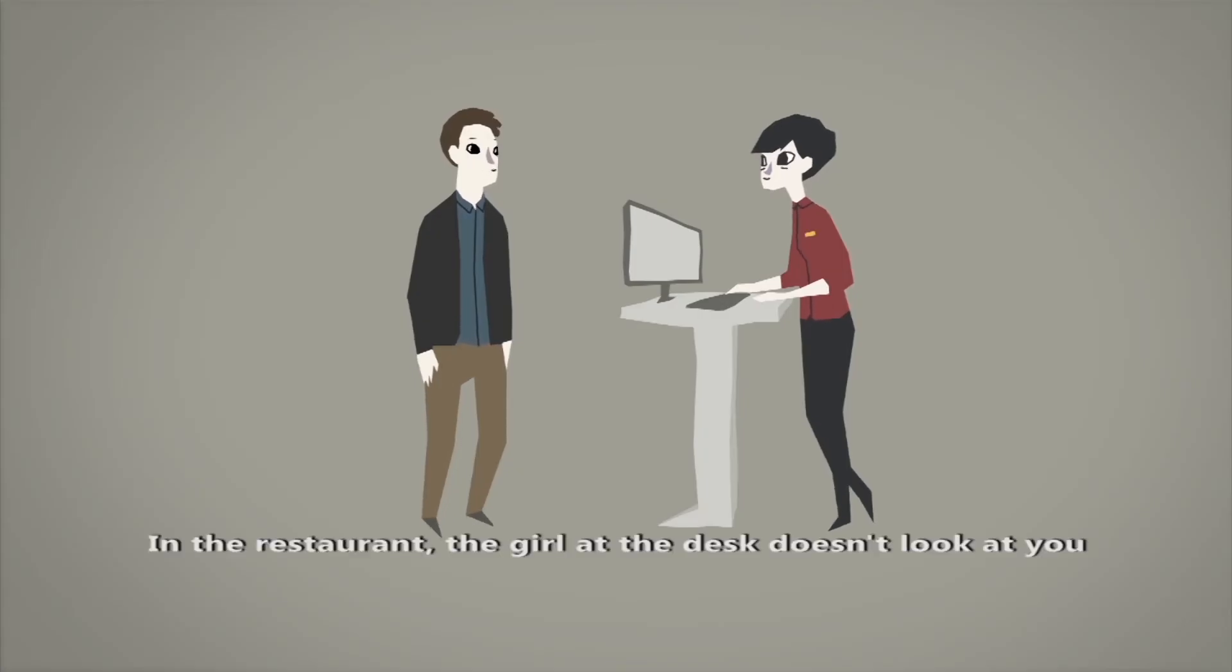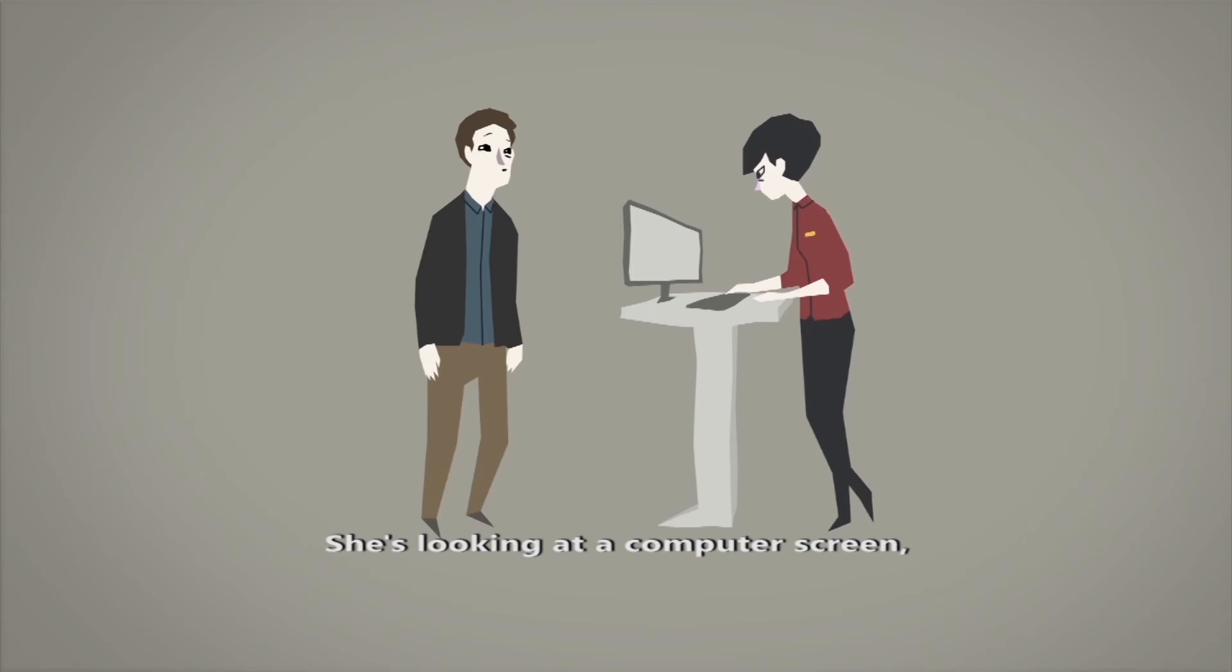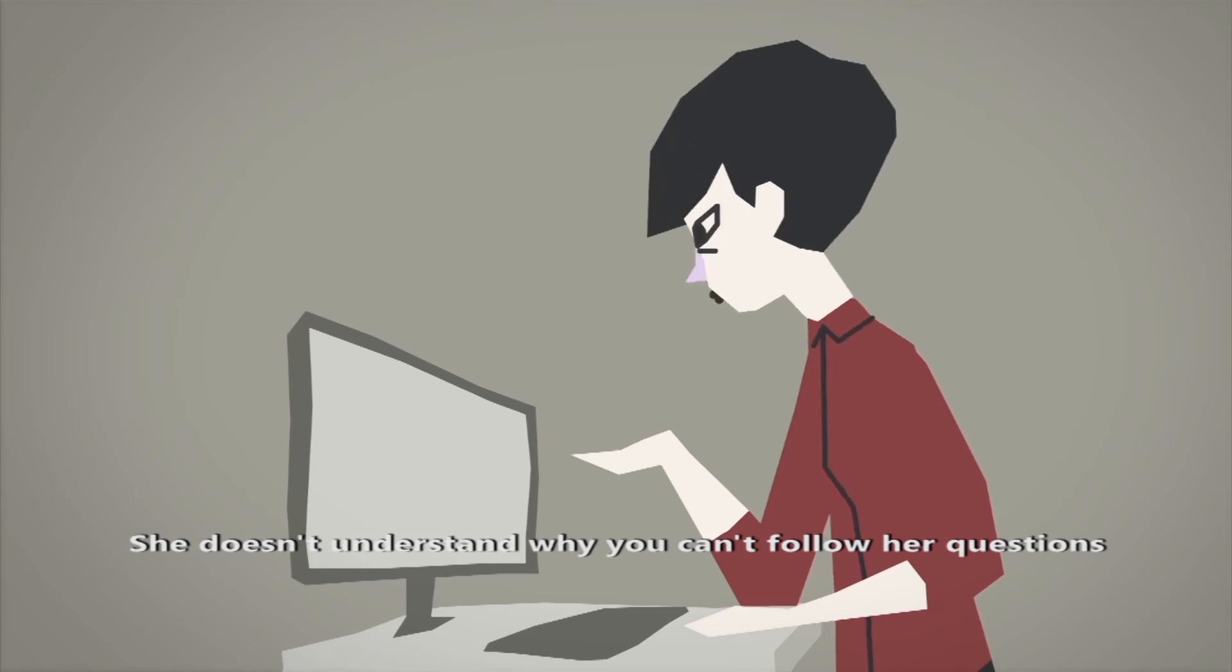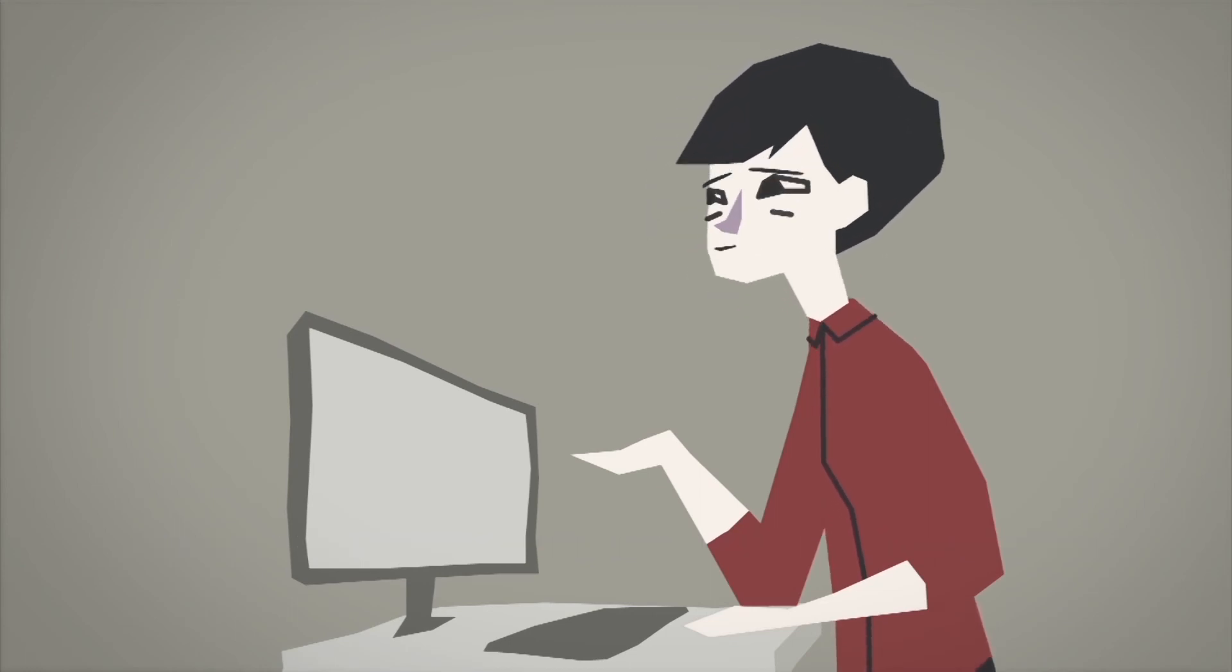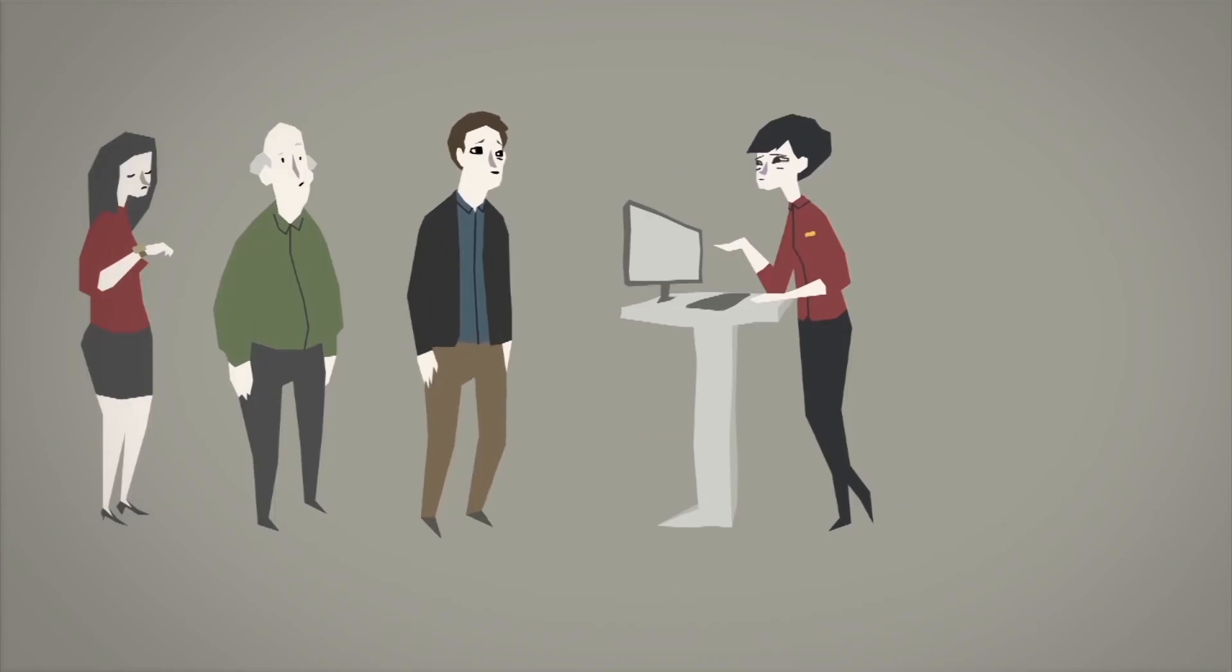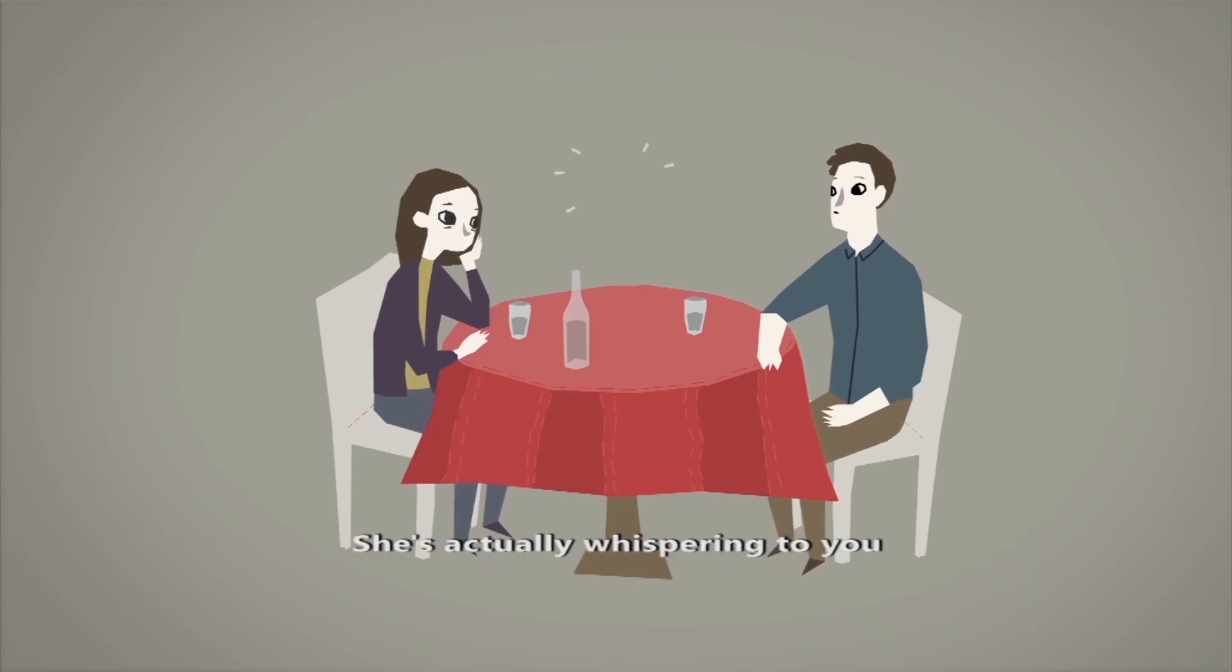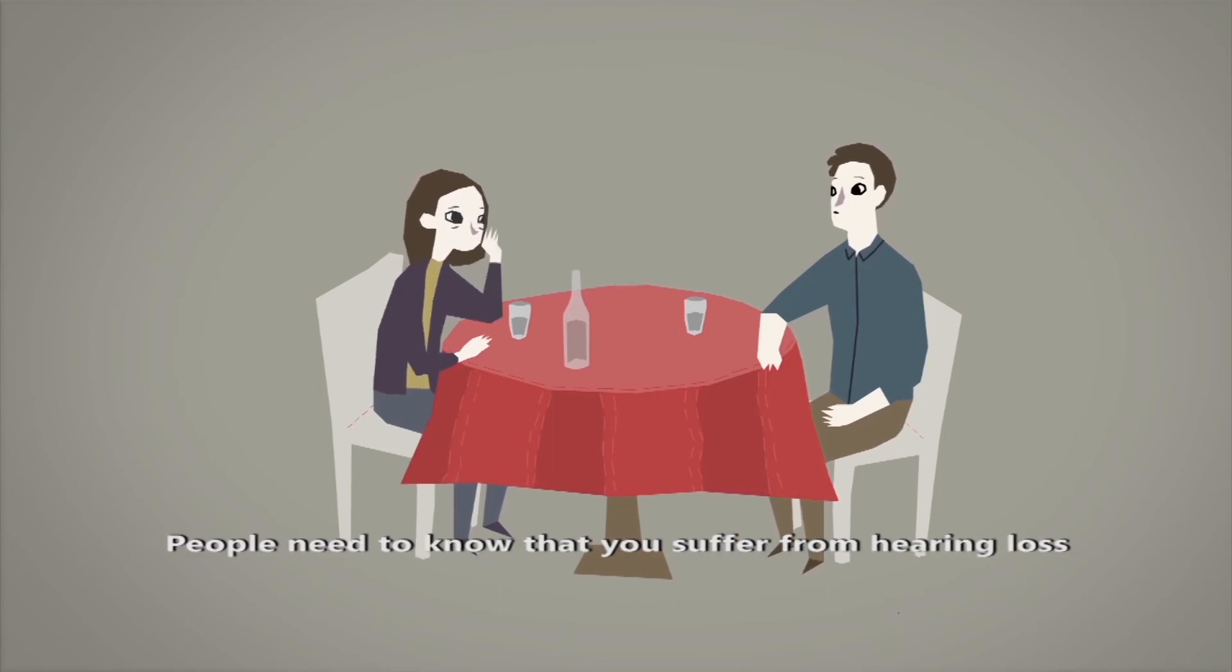In the restaurant, the girl at the desk doesn't look at you. She's looking at a computer screen to read your booking details. How can you lip read if she doesn't look at you? She's getting frustrated. She doesn't understand why you can't follow her questions. Your colleague tells you the latest gossip from her office. She's actually whispering to you. People need to know that you suffer from hearing loss.